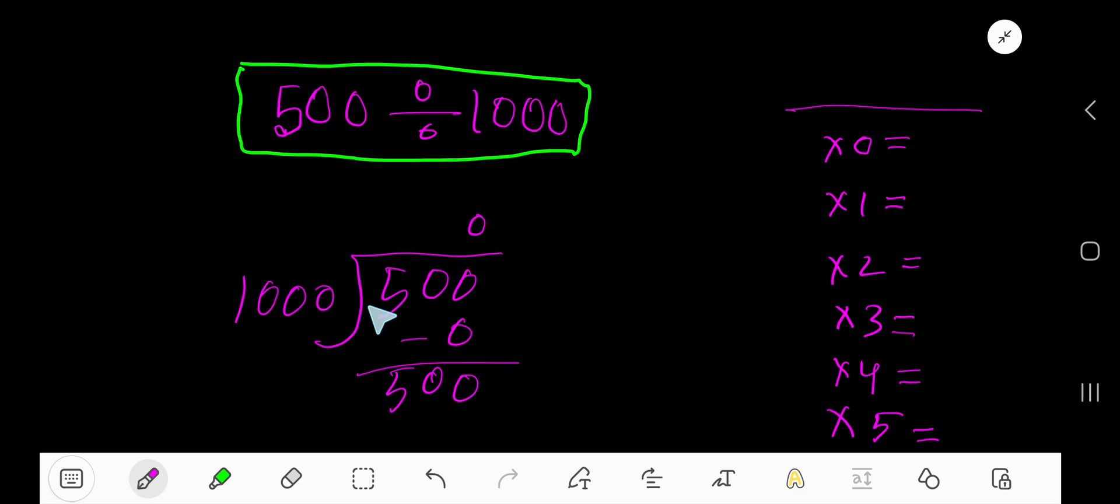Let me show you the multiplication table of 1000. 1000 times 0 is 0. 1000 times 1 is 1000. Just add 1000 with the previous step: 0 plus 1000 equals 1000. Then 1000 times 2, just add 1000 with this 1000, so we are getting 2000.